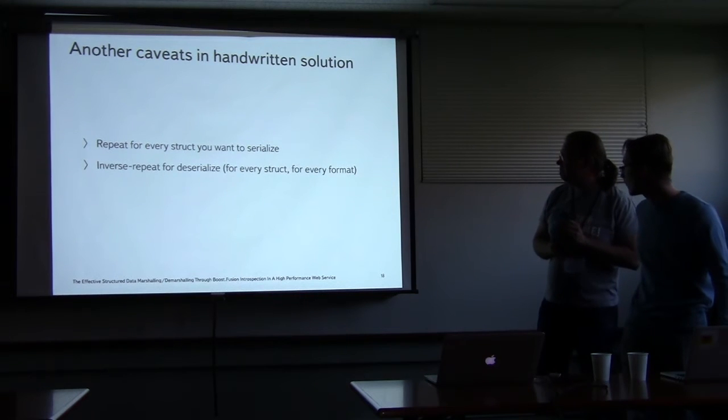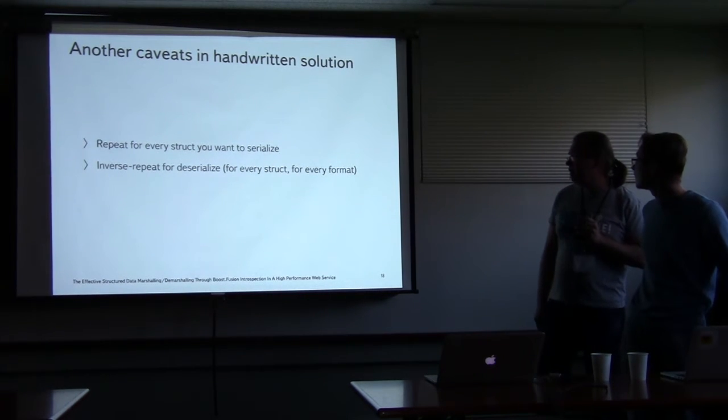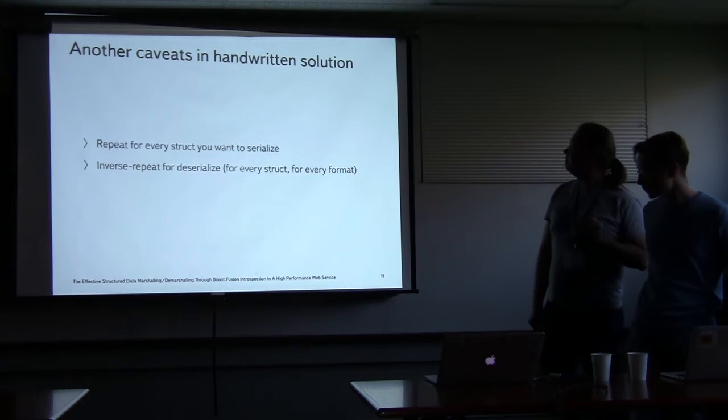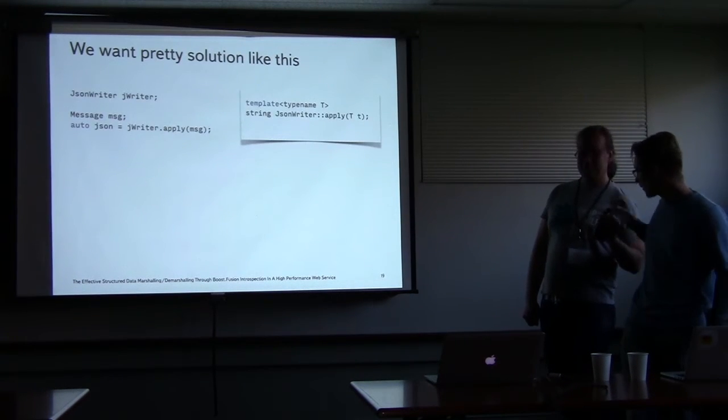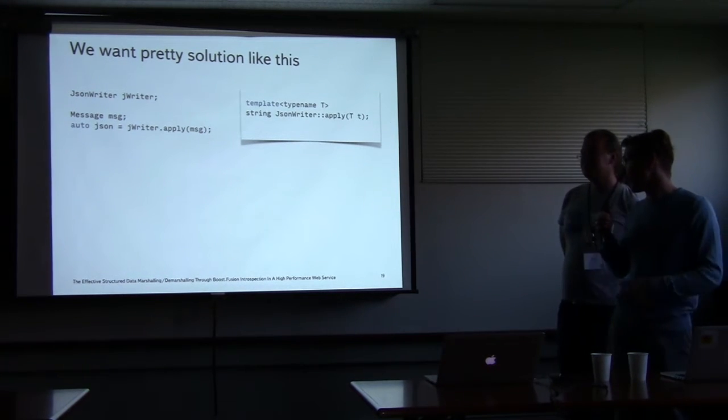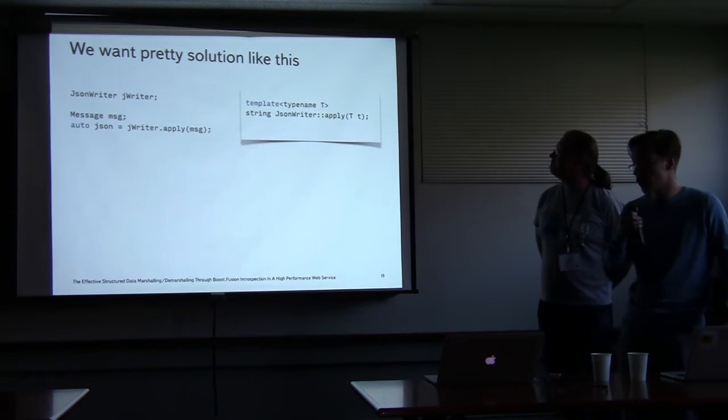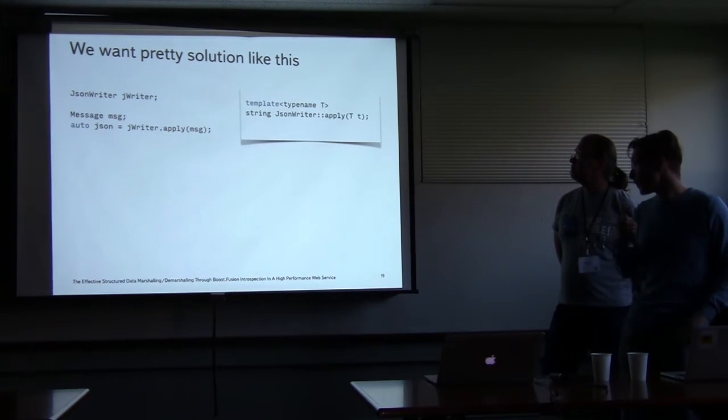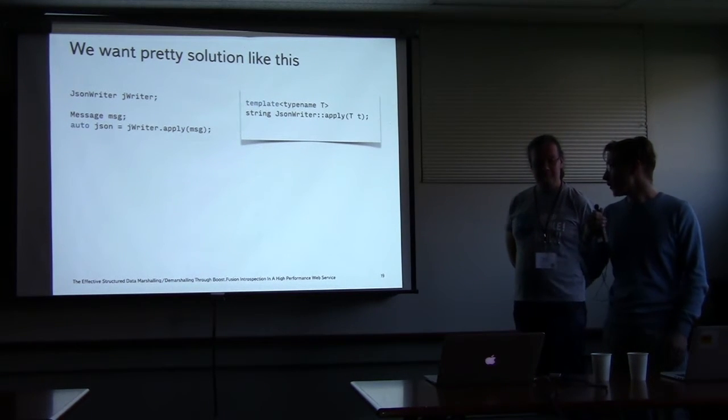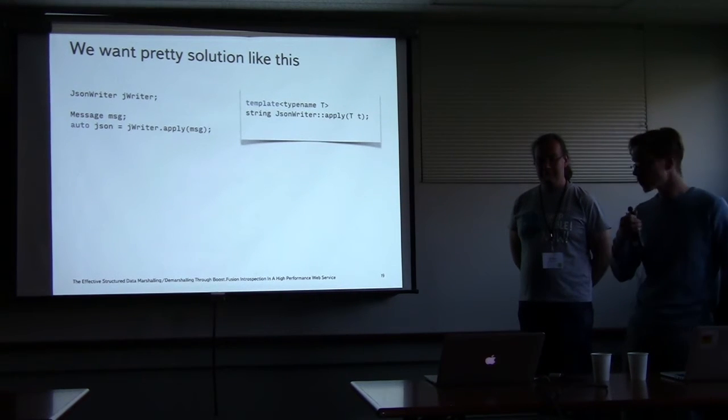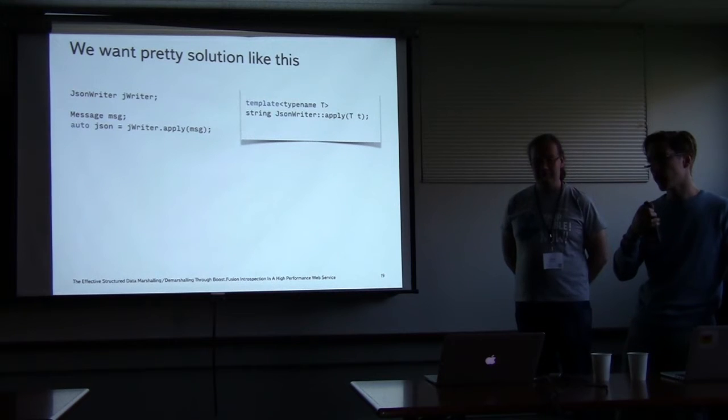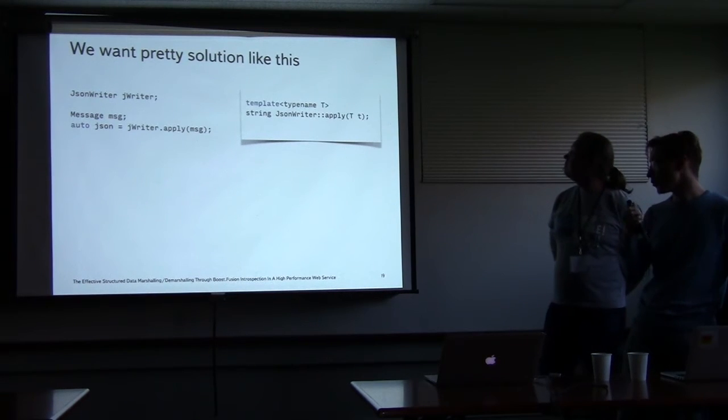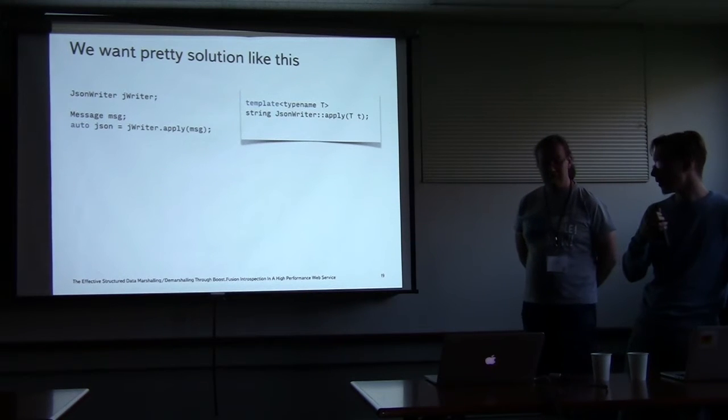So there are some disadvantages of the previous approach. In a nutshell, we want code like this. We want some object that knows how to serialize data in JSON, we need some object to be serialized, and we need some routine that does the stuff like that. Please notice that JSON writer here, the object that does the magic, isn't aware of what kind of structure you want to serialize at the time that you created it. All the code we write in the JSON writer is unaware of structures and can be applied to any structure you want.